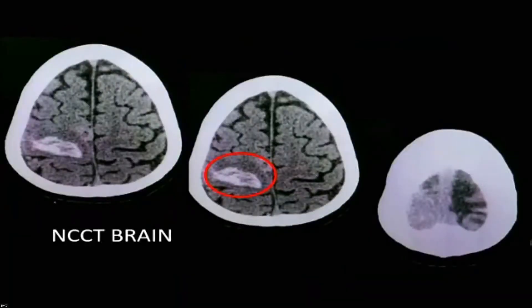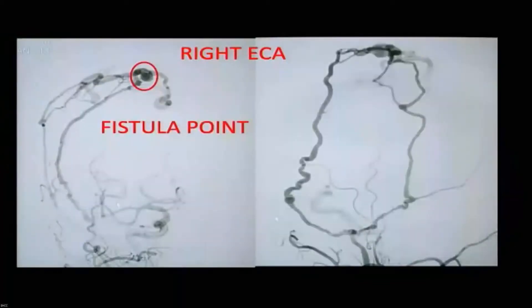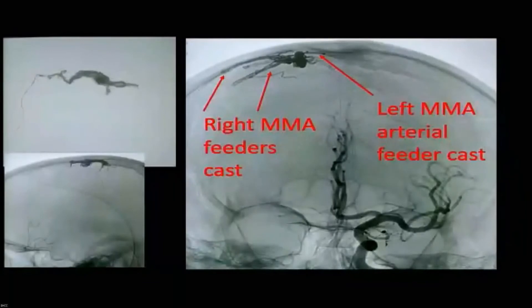A 46-year-old gentleman presented with seizure and left-sided weakness. There was a right subcortical parietal hemorrhage. On investigation we found a dural AV fistula, which was embolized with Onyx. He is doing well — able to walk with power around 4/5.